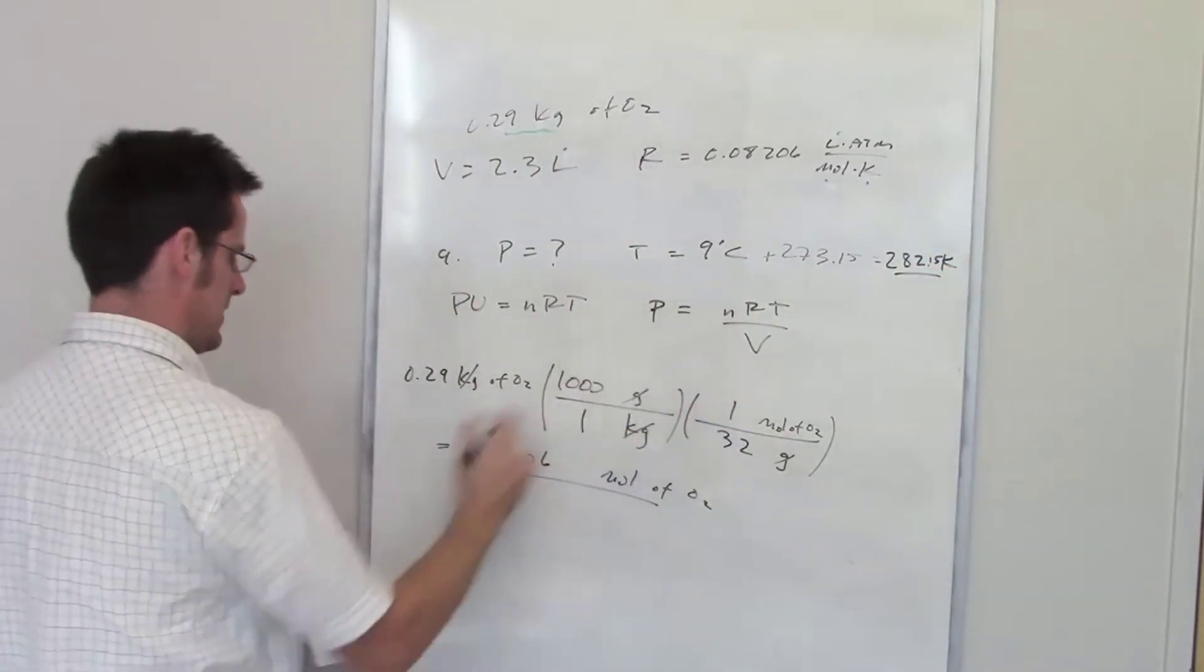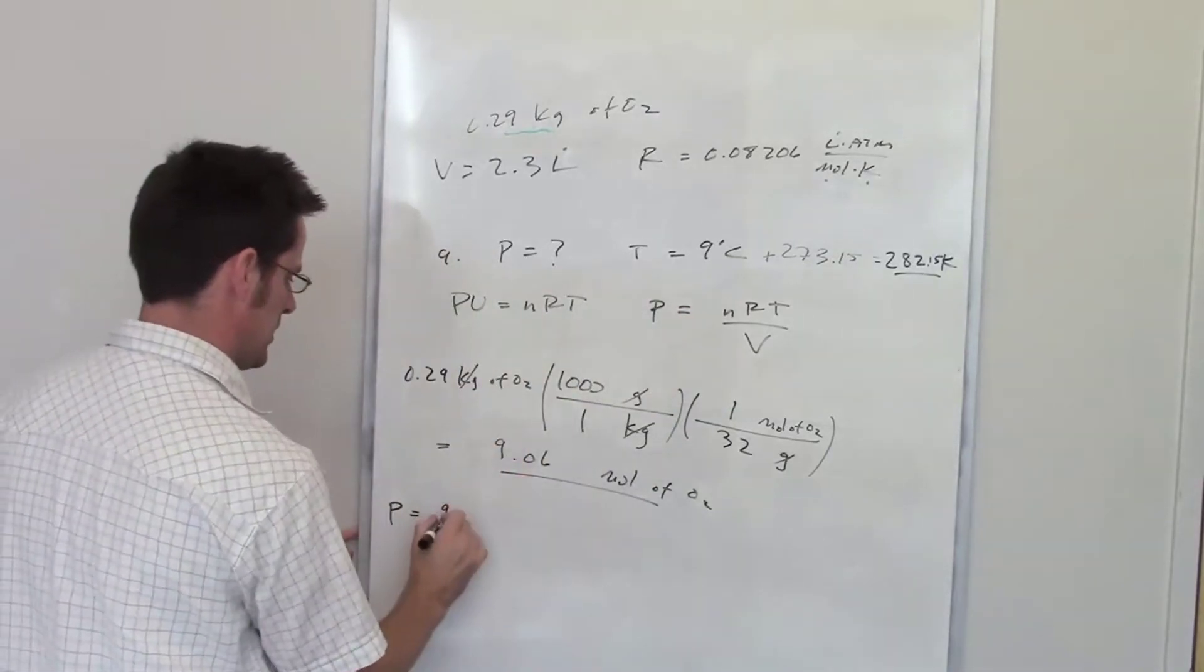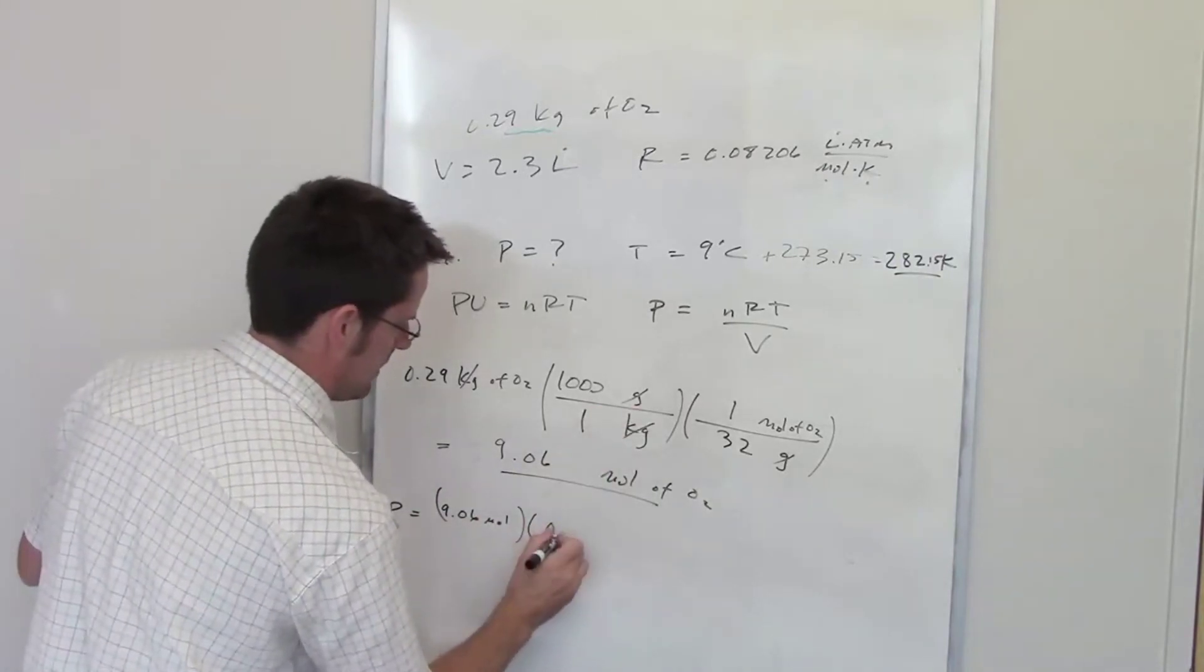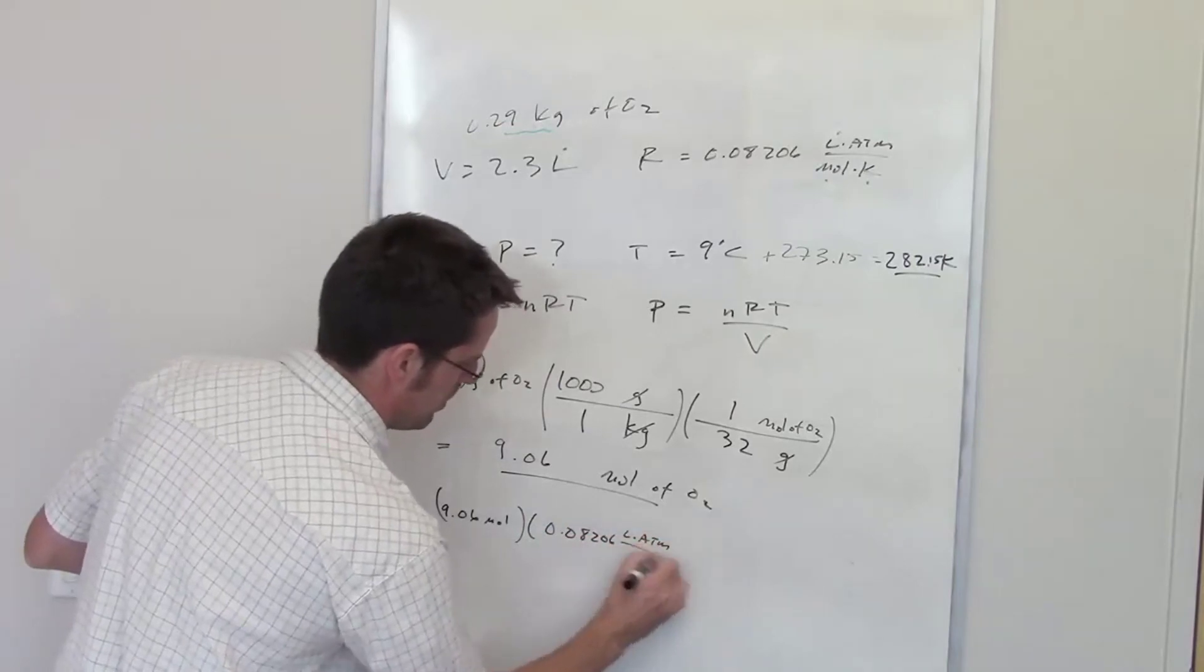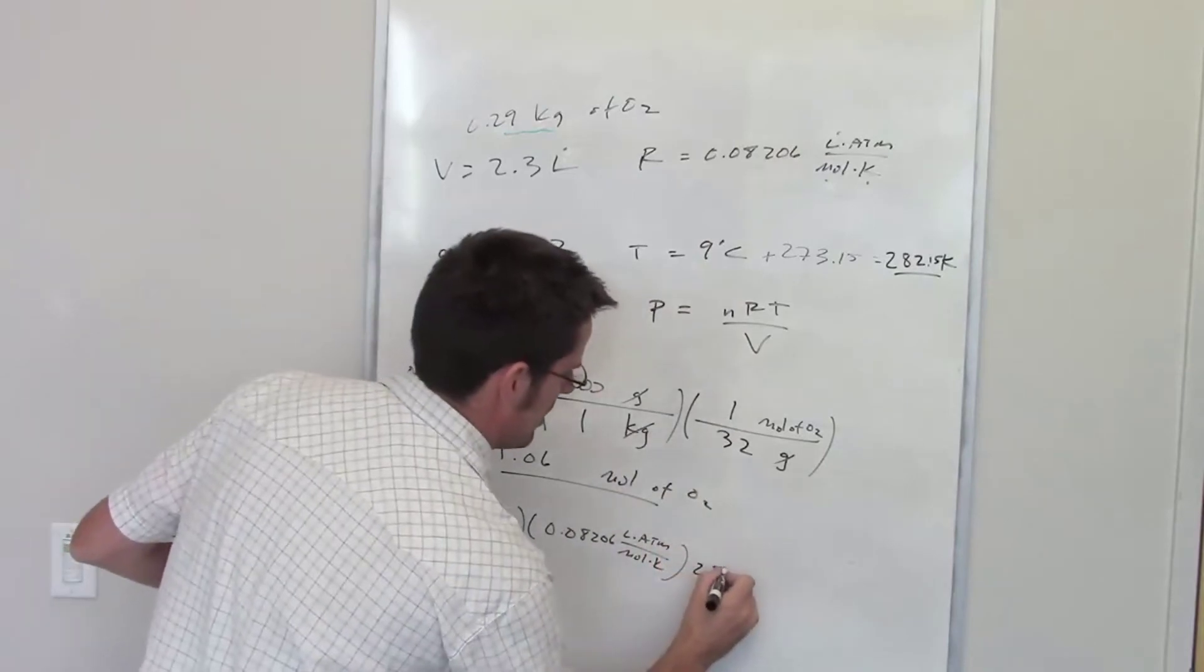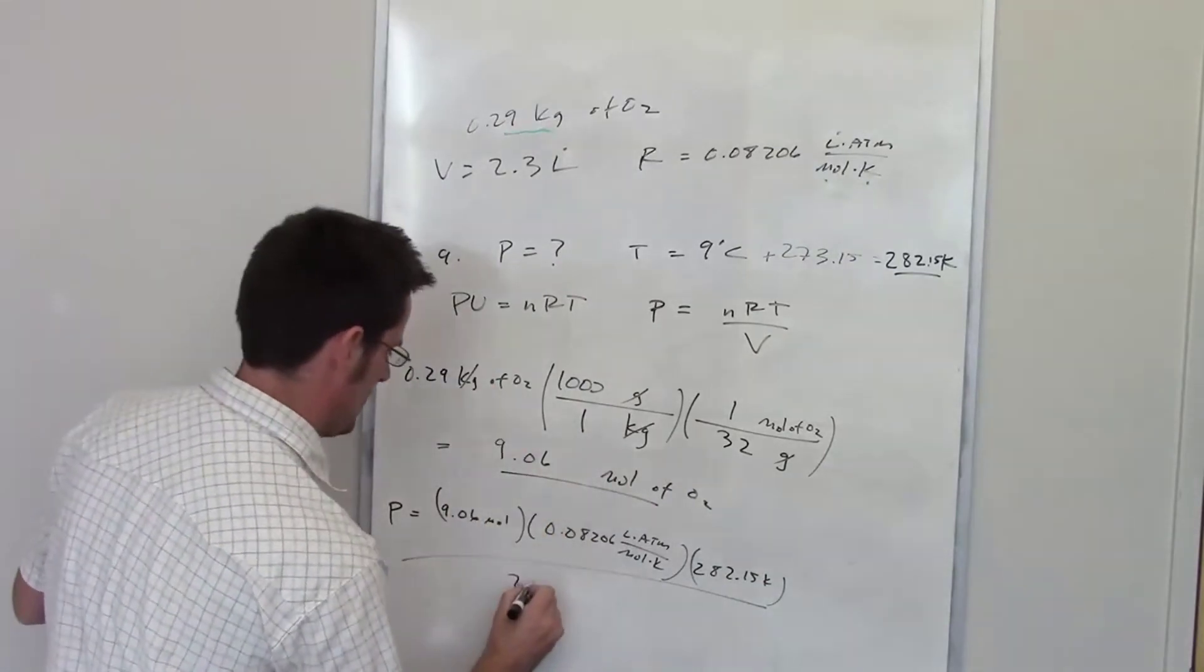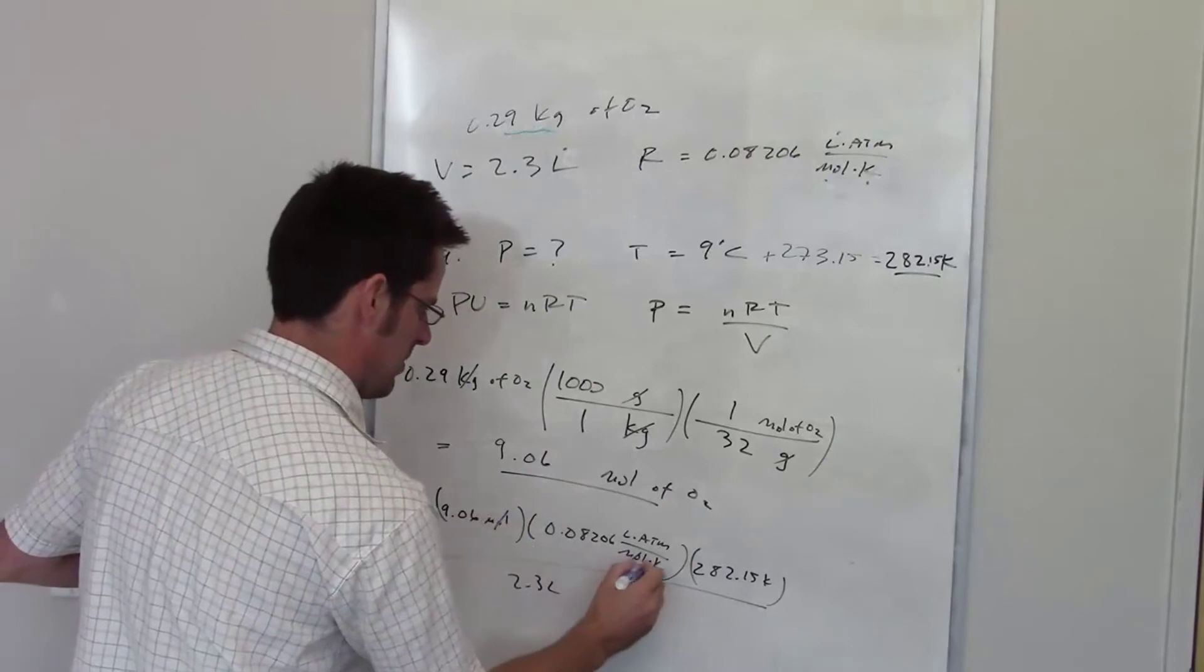Let's take this information and use this equation. Throw everything in here: I've got moles, 9.06 moles for n. I've got R, my ideal gas constant 0.08206 liter atmospheres per mole Kelvin. I've got temperature which is 282.15 kelvins, and beneath that I've got my volume which is 2.3 liters.